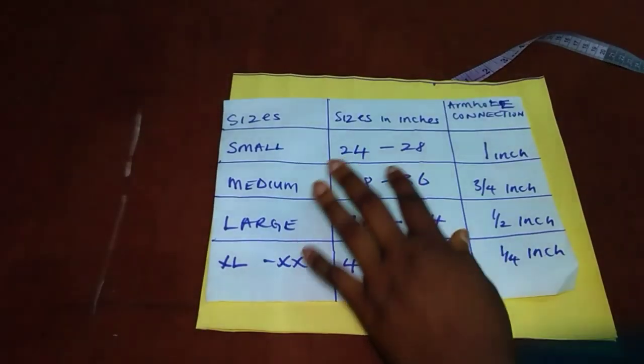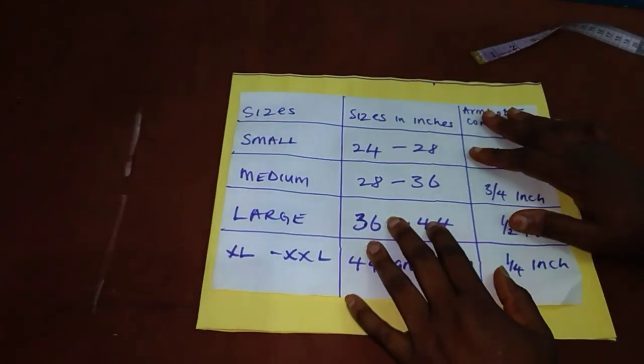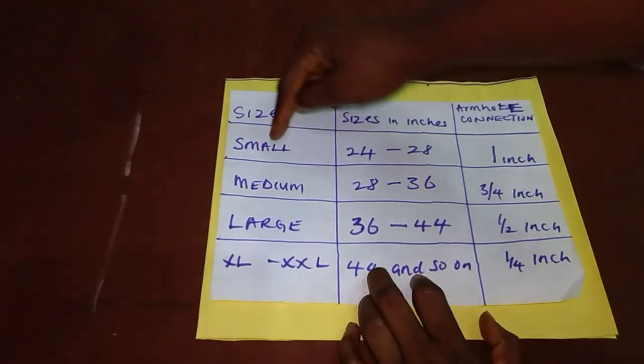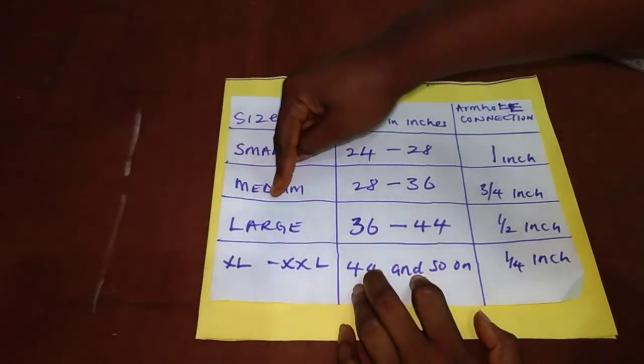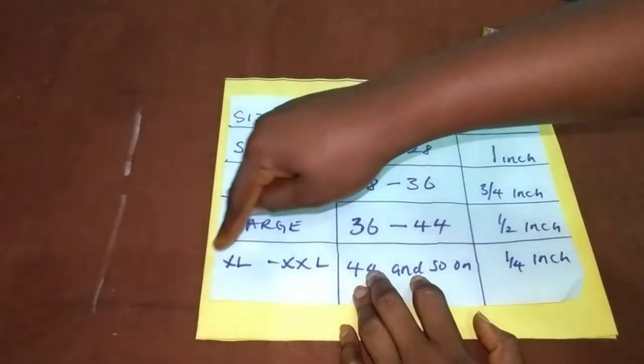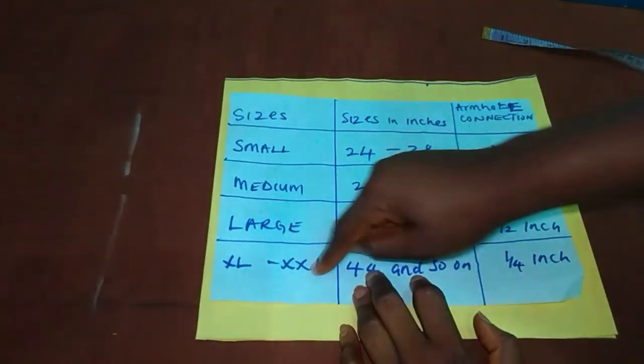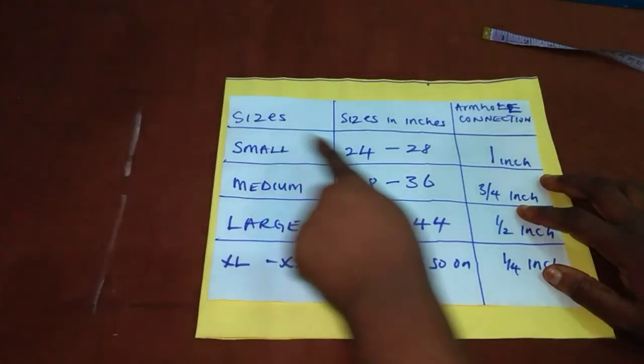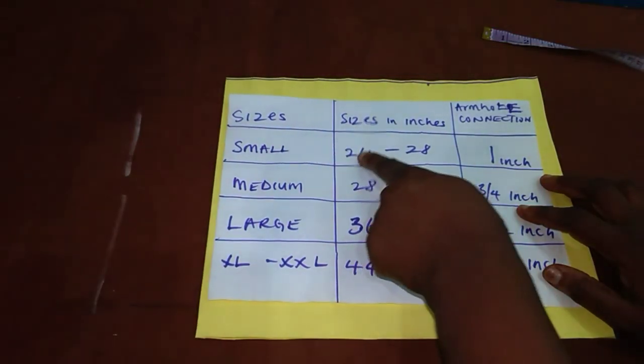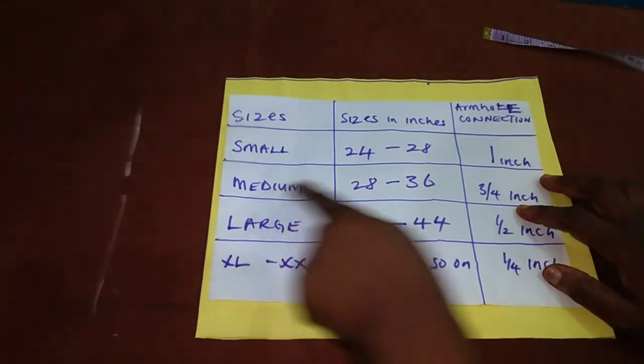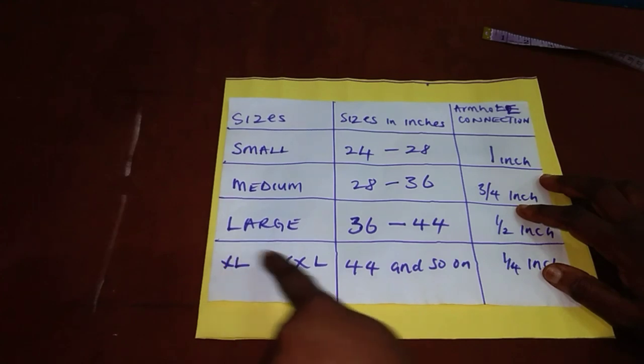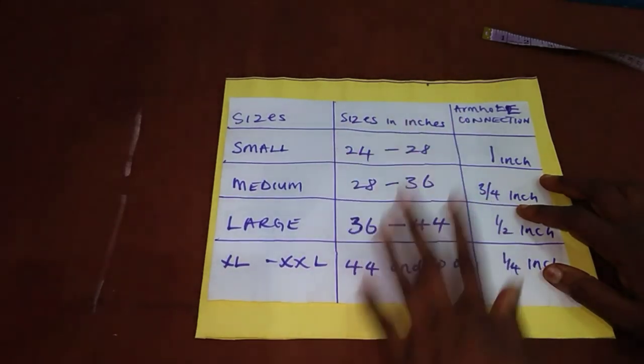So these are the necessary information you need to know in constructing your armhole. You have the small, the medium, the large size, the XL and XXL sizes on this side. Now, if you are size small, it means your bust measurement is falling between 24 and 28. For medium, 28 to 36. For large, 36 to 44. For XL and XXL, 44 and above.